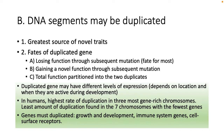A duplicated gene may have different levels of expression based on where it's located and when it's active during development. Humans have the highest rate of duplication in the three most gene-rich chromosomes, and the least amount of duplication is found in the seven chromosomes with the fewest genes. Genes must be duplicated especially during growth and development, immune system genes, and cell surface receptors.